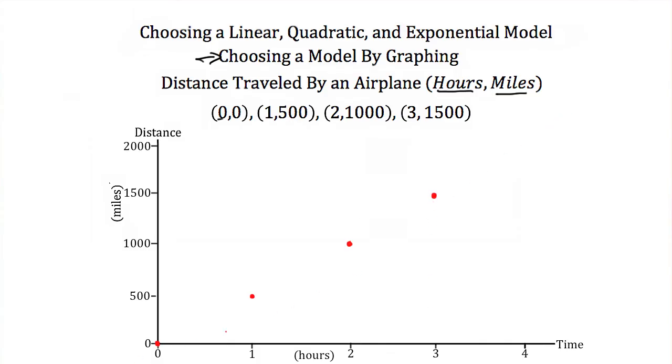These points appear to be in a straight line. I know that linear models, when you graph those points, those are in a straight line. So I'm going to guess the distance traveled by an airplane, or at least this airplane, is going to be representing a linear model.